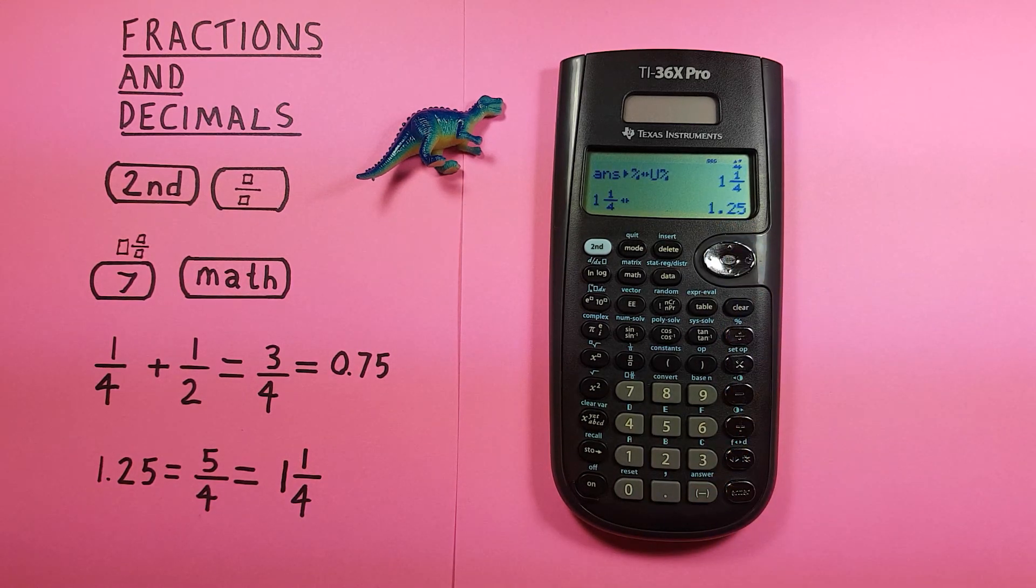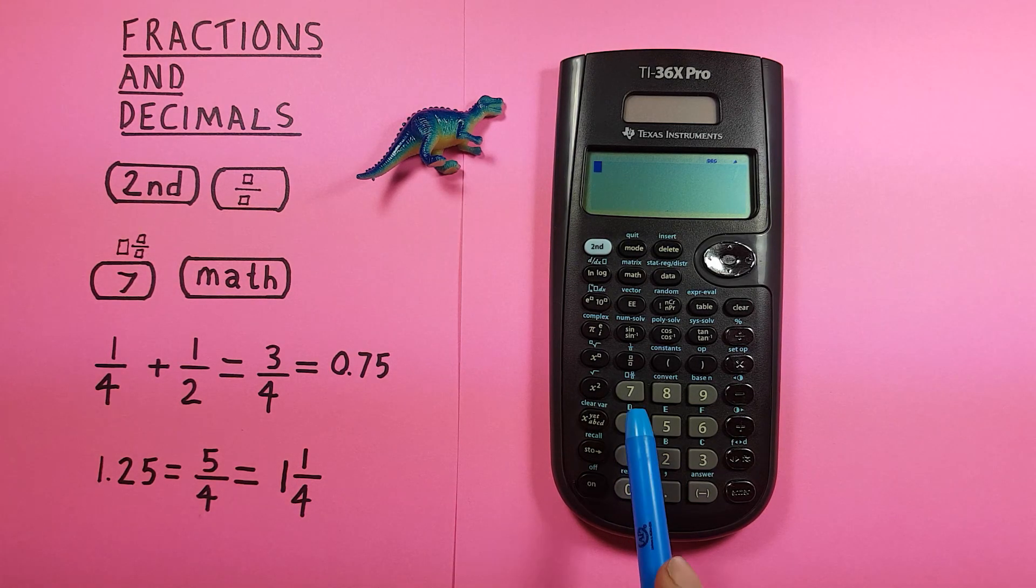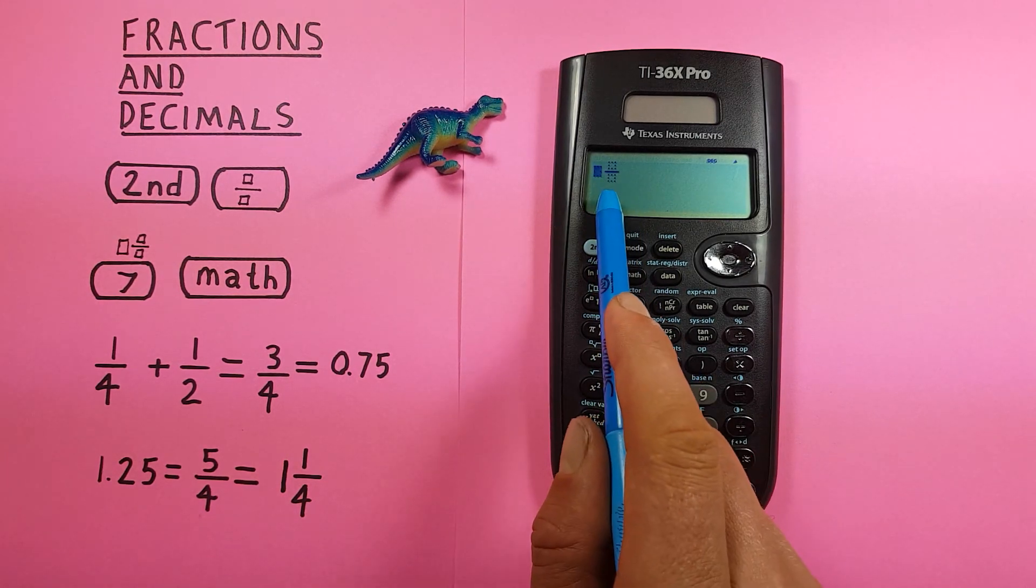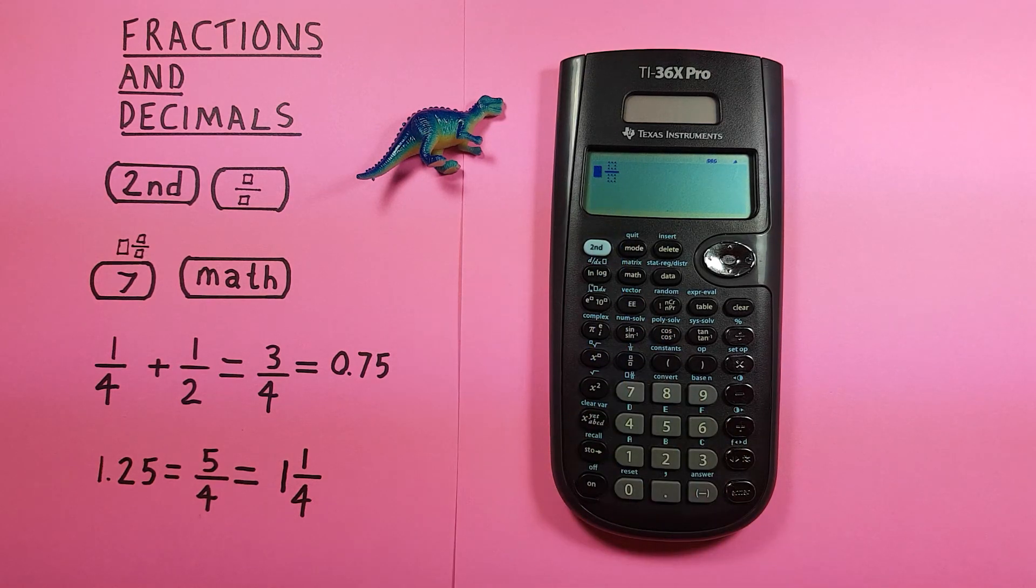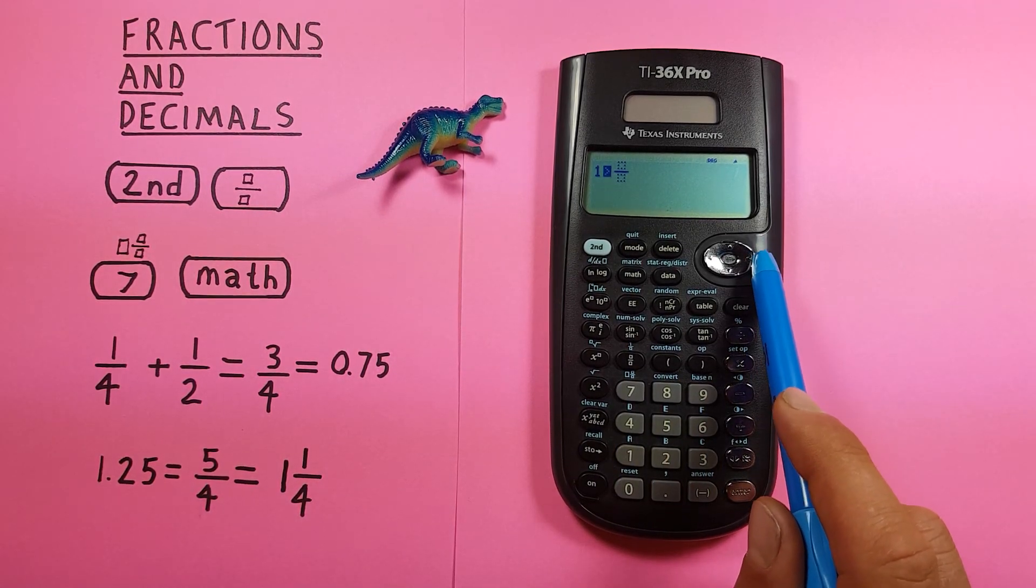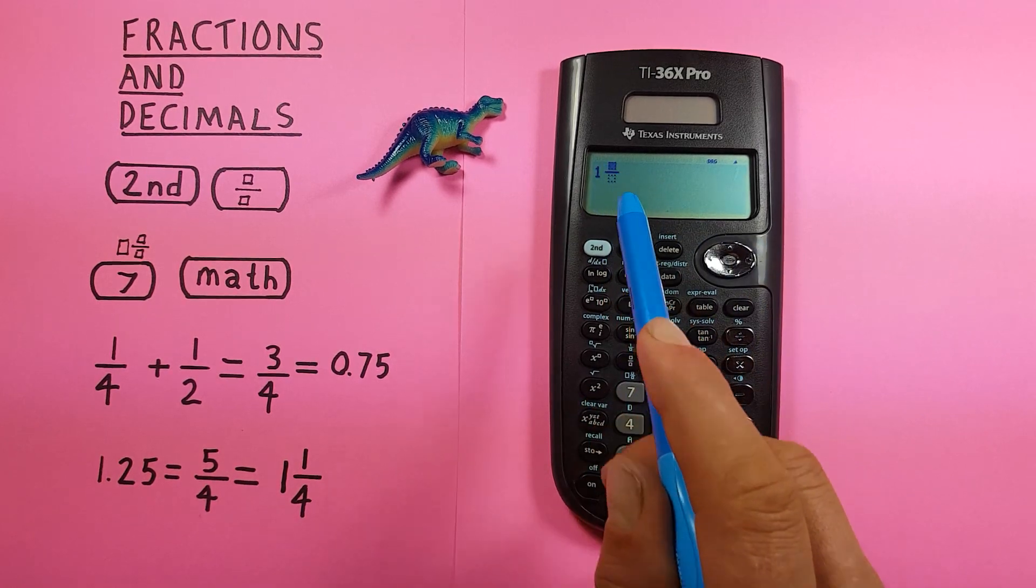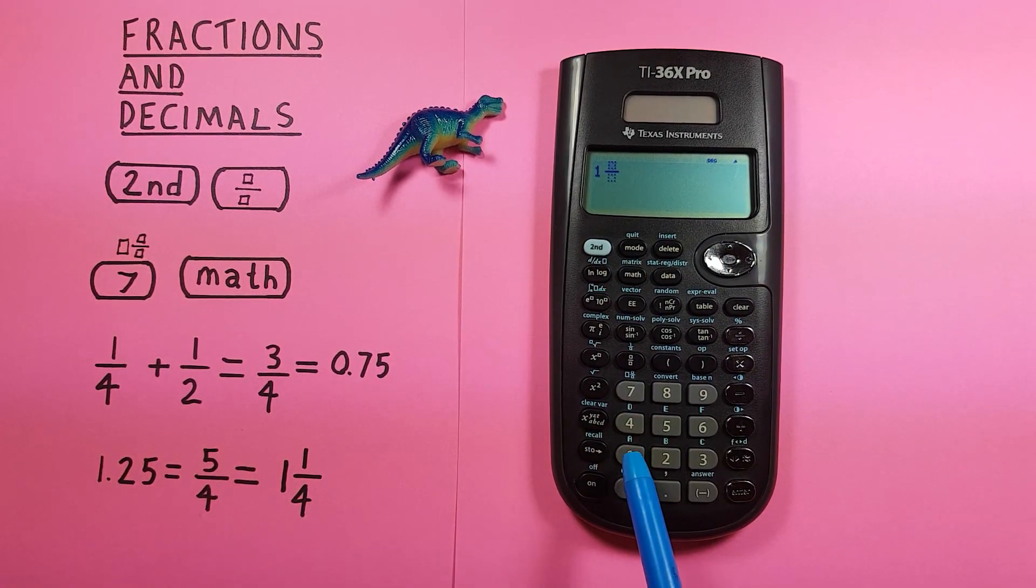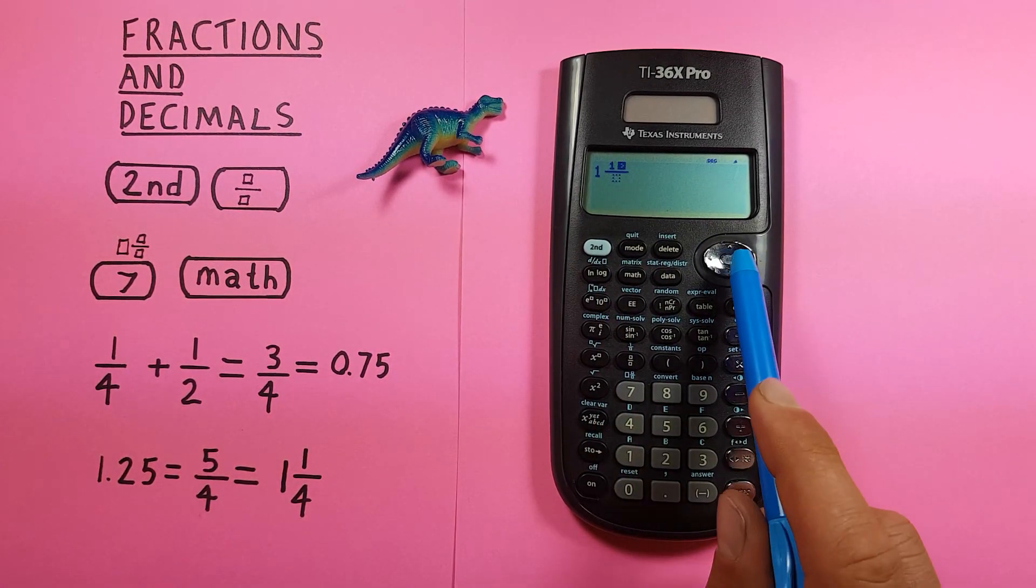You can also enter mixed fractions using 2nd 7. Press 2nd 7 to get three boxes. To enter this number, press 1 for the whole number, arrow right to the numerator and press 1, go down to the denominator and press 4. Press enter and it converts back to 5/4.